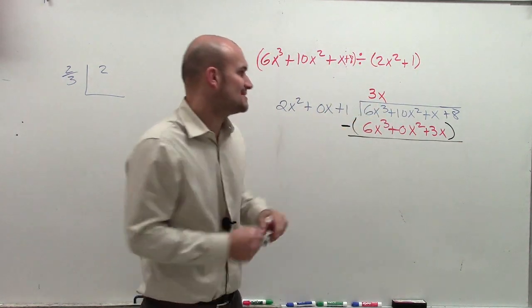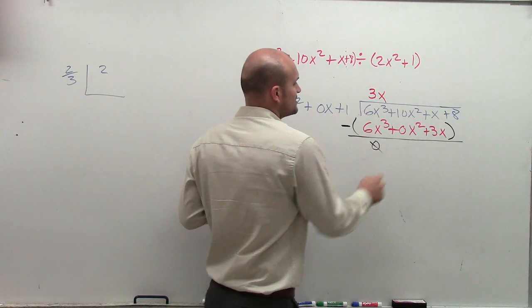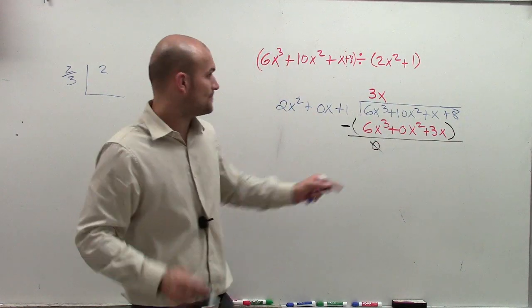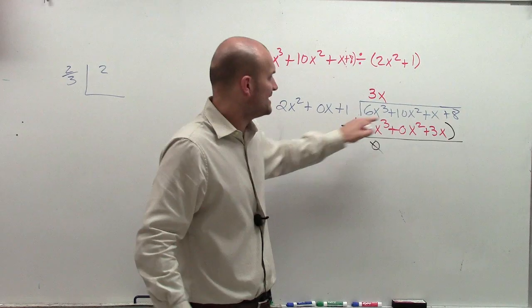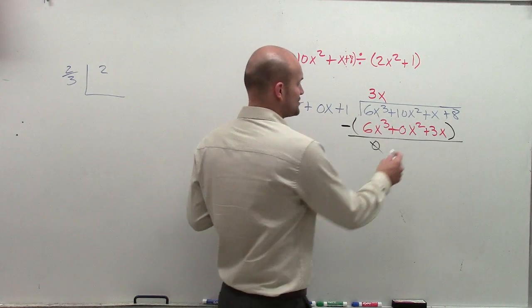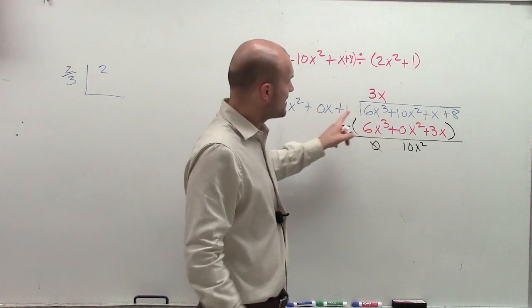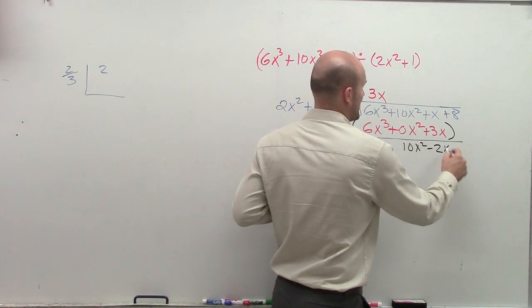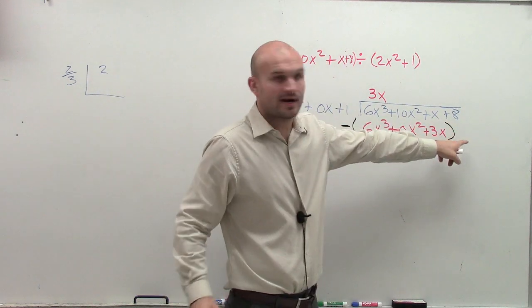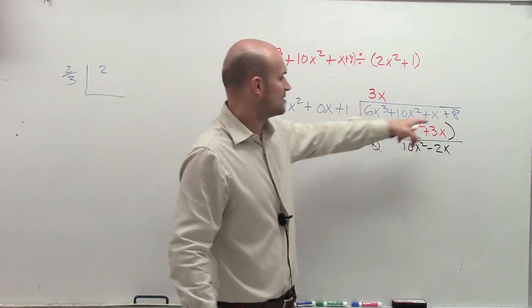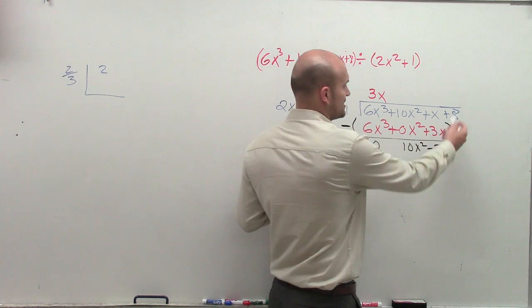6x cubed minus 6x cubed we know is going to be 0x cubed, which will be 0. 10x squared minus 0x squared is actually going to give us 10x squared. And then x minus 3x will give us a negative 2x. I don't have a 0 there, so you could do 8 minus 0, it's just going to give us an 8.